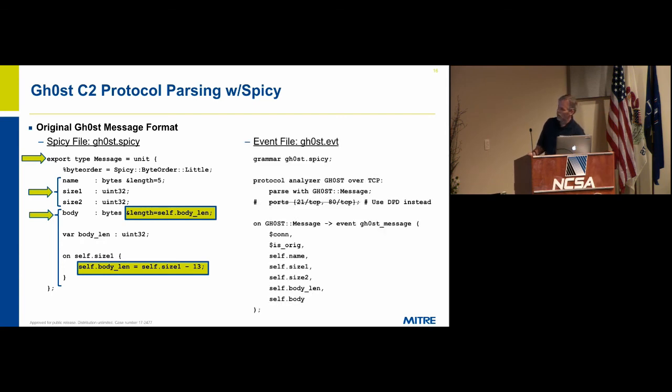The body length is calculated by taking this first size value and subtracting the size of the header from that. In the subsequent versions of this, we had to jump through other hoops to calculate that properly based on the size of this being different. So we're using this self-referential means of determining what the body length is.